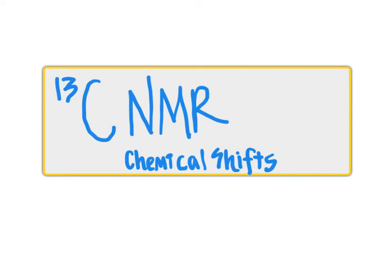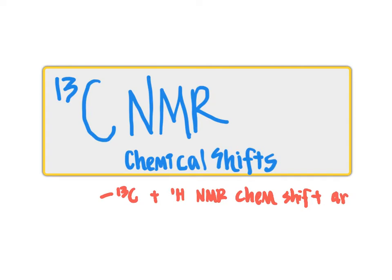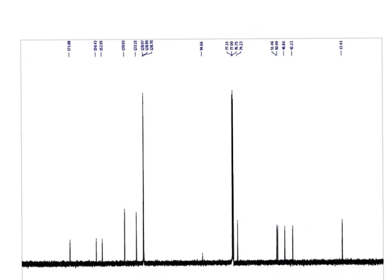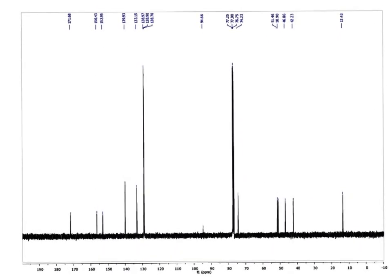First off, thinking about the similarities between a carbon NMR chemical shift and a proton NMR chemical shift, the origin of the chemical shift is the same between the carbon atom and the proton. In the case of carbon-13 and proton NMR, the chemical shift in both cases arises from the difference in energy between the spin states. When we look at a carbon NMR spectrum versus a proton NMR spectrum, we'll use this as just an example spectrum to highlight some things about carbon-13 NMR.